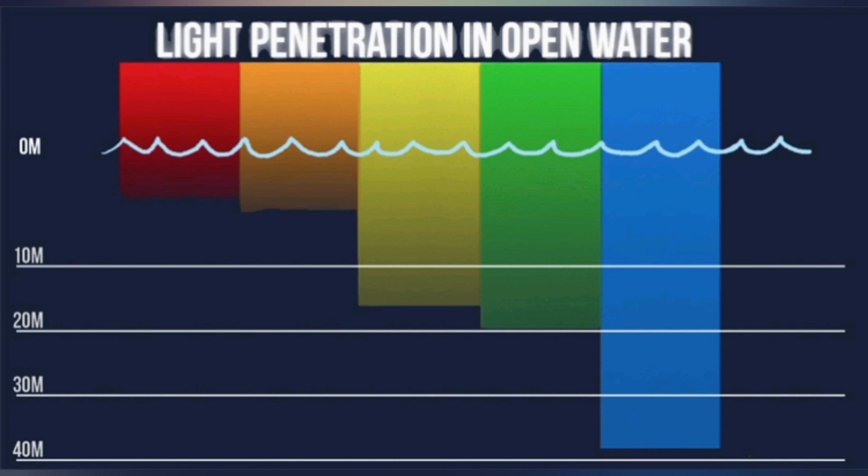That's why a t-shirt looks green. In shallow bodies of water, like a drinking glass, light penetrates it completely as there is not enough water to absorb enough photons, so we see the water as colorless.